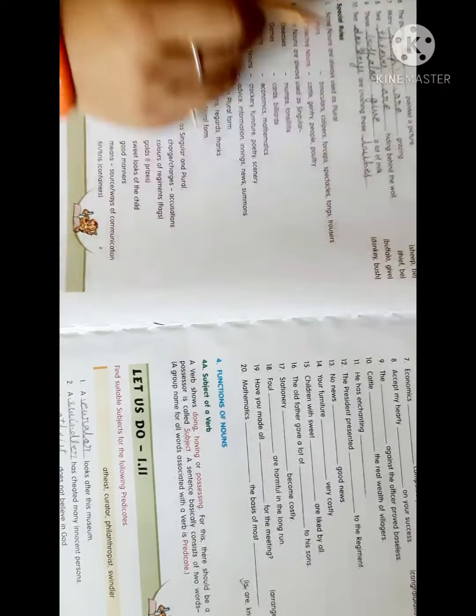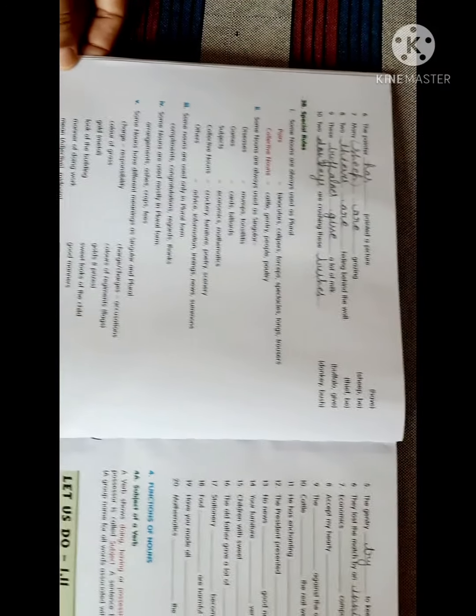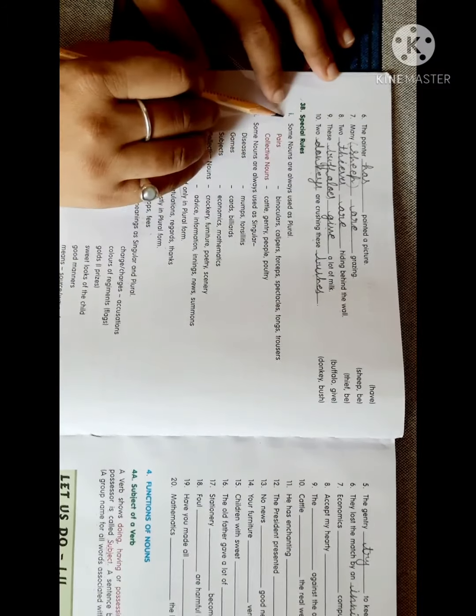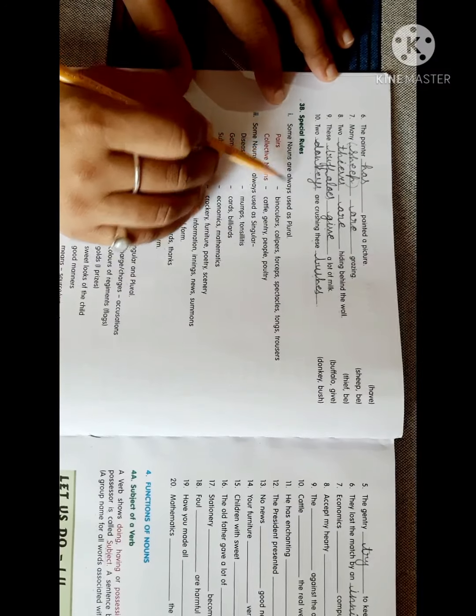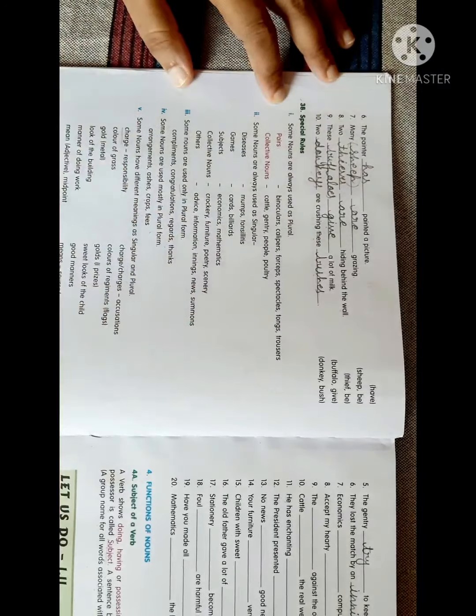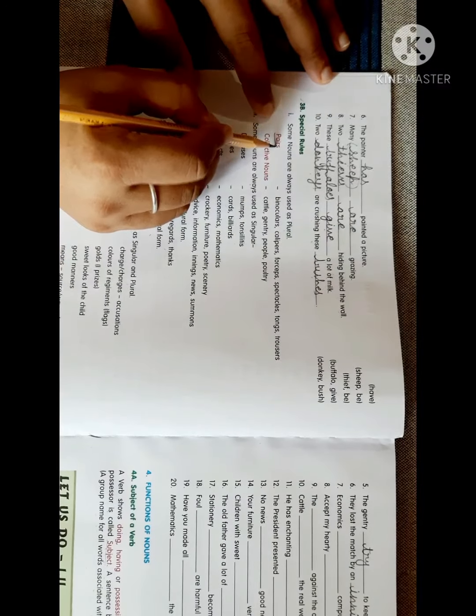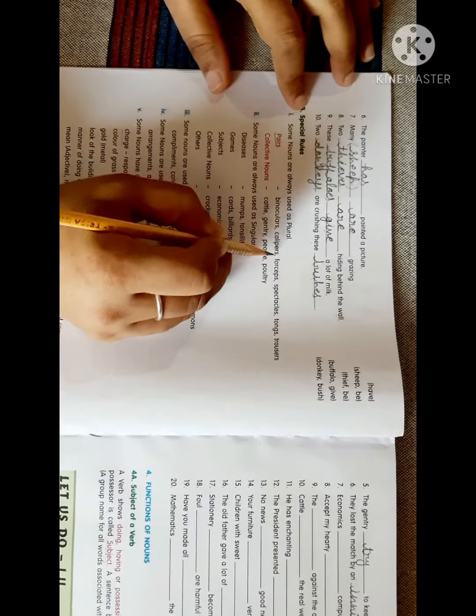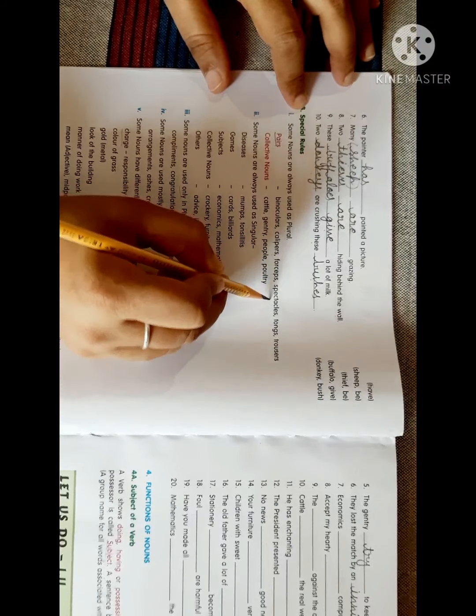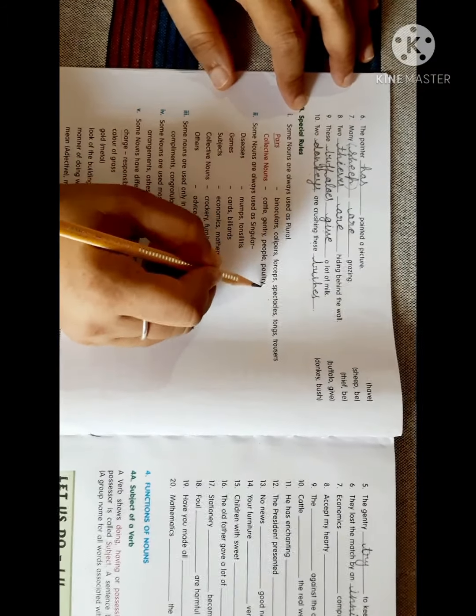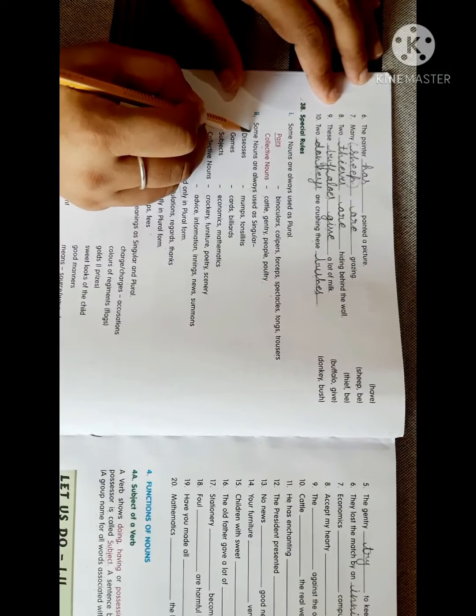There are some special rules. Just see what are these. First, some nouns are always used as plural. There are some pairs: binoculars, calipers, forceps, spectacles, tongs, trousers. Collective nouns: cattle, gentry, people, poultry.